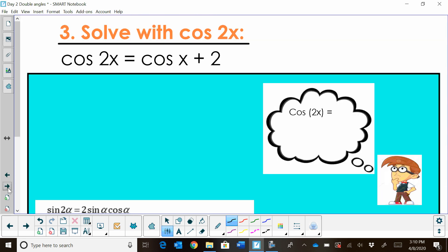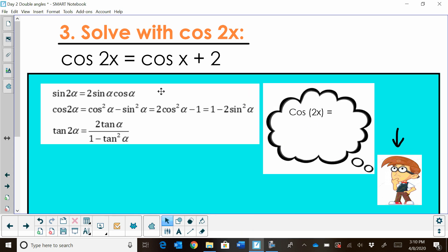Now, let's look at this one. Cosine or solving a cosine of a double angle. So solve with cosine of 2x. So again, we've got cosine of 2x is equal to cosine of 1x or a single angle plus 2. Well, you've got to think, hmm, what does cosine of 2x equal to? So let's bring up our formulas.